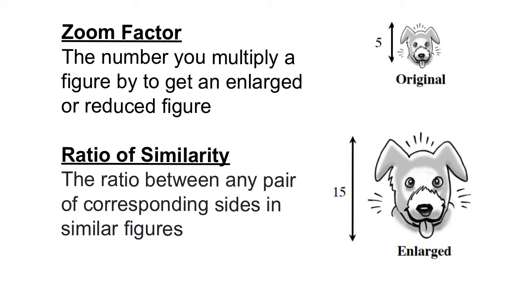So if you look at the example that we have here, we've got this puppy that is 5 units tall and then the next one is 15 units tall. In order to get from 5 to 15 you just multiply by 3, so our zoom factor for this problem would equal 3.